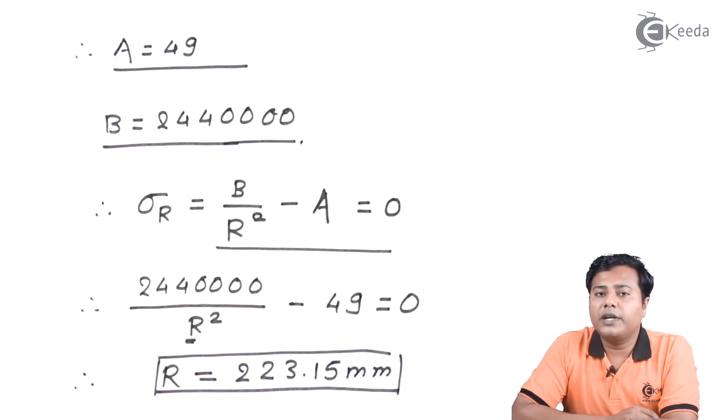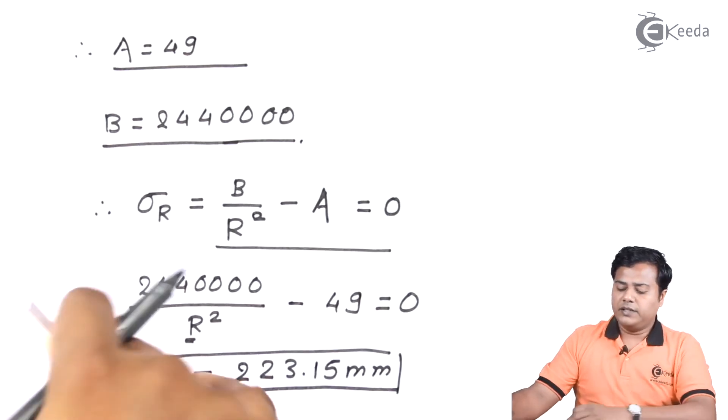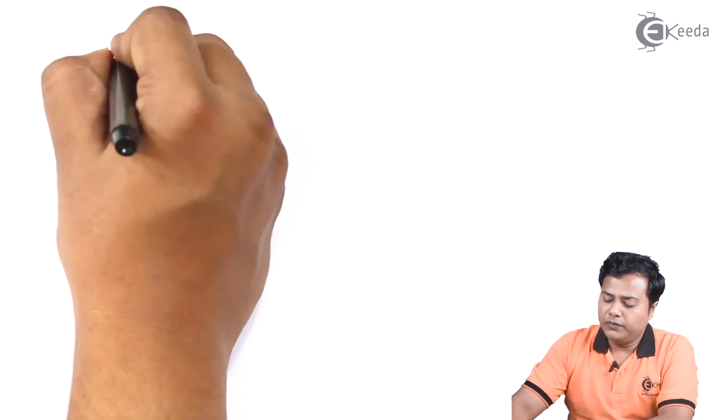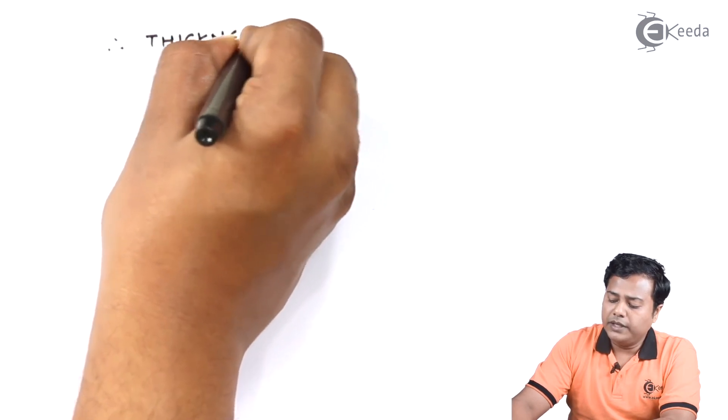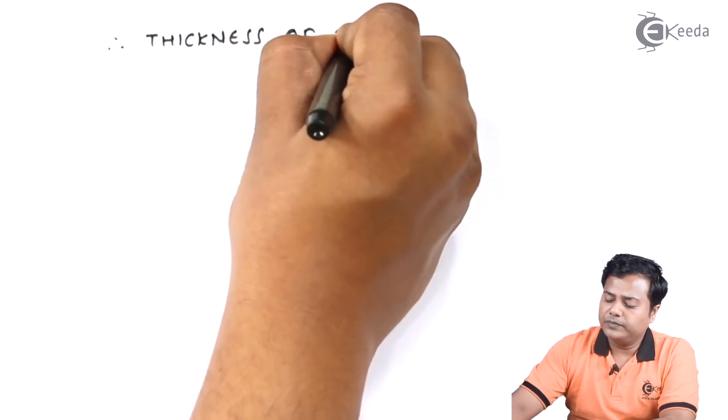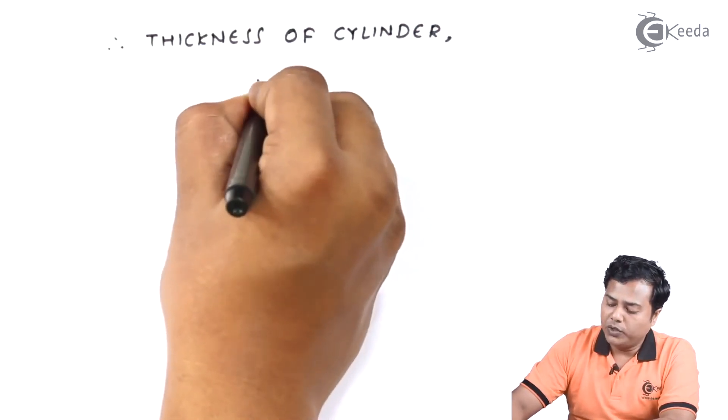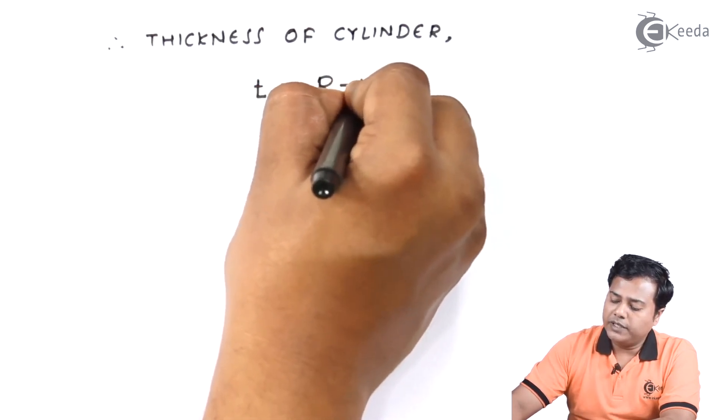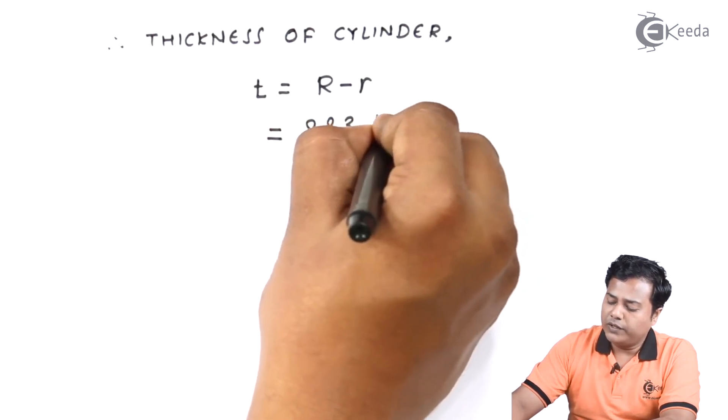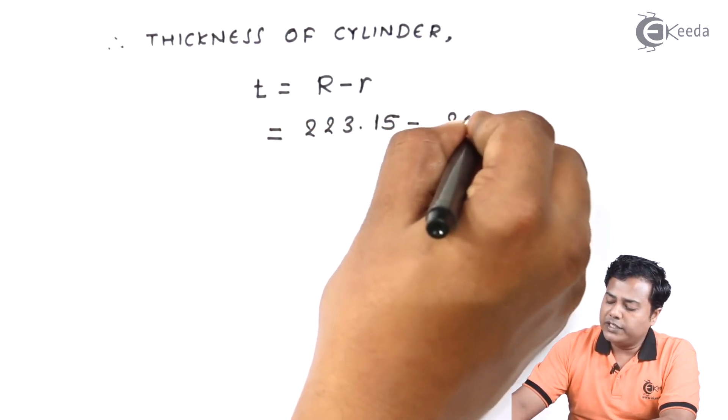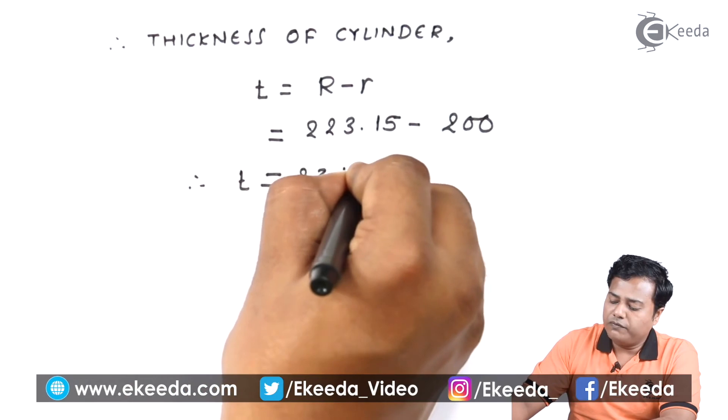Somehow this is the value of radius we have obtained, the outer radius, but we need to find out the thickness of it. And hence in the next step we are going to find out the thickness. Therefore thickness of the cylinder is given by small t is equal to the outer radius minus the inner radius. Outer radius we now know is 223.15 minus 200 which is the inner radius and hence the thickness comes out to be 23.15 mm.